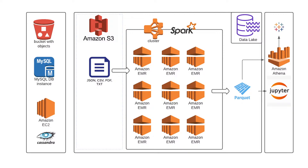Those are then processed on a daily job basis by Amazon EMR instances that get kicked up. Using Spark, those are set up as a Spark job, and those execute all these files and convert them into columnar data from which we can do analytics. Those then get written into another S3 bucket as processed data, and those are all Parquet files.